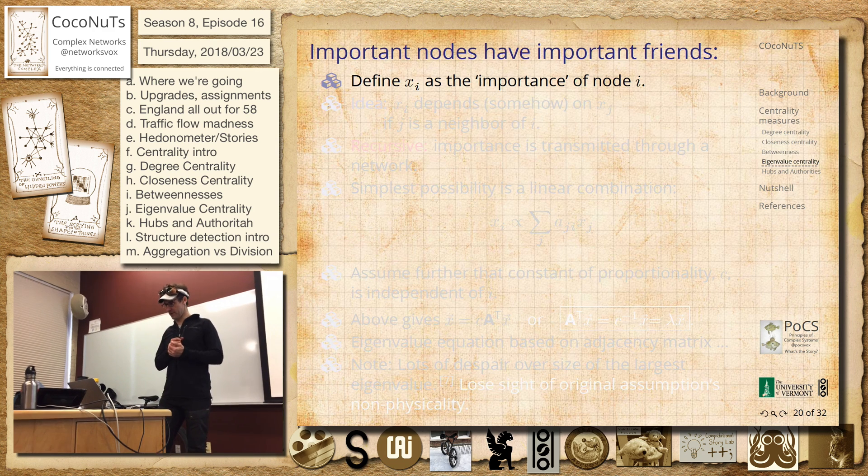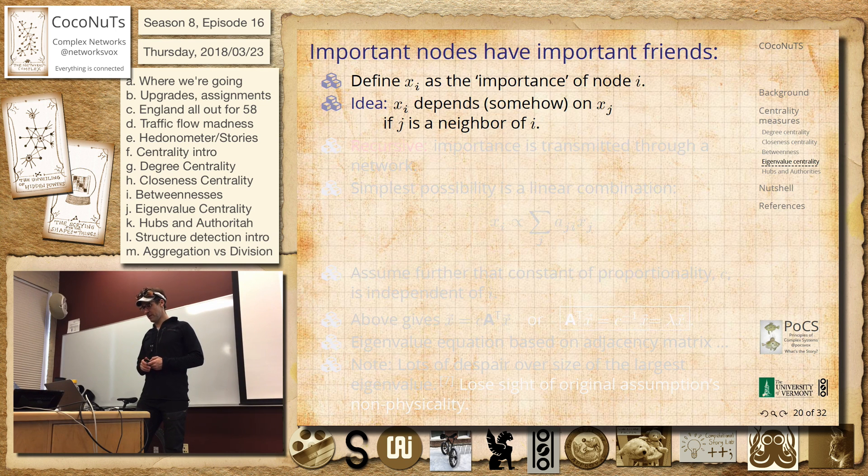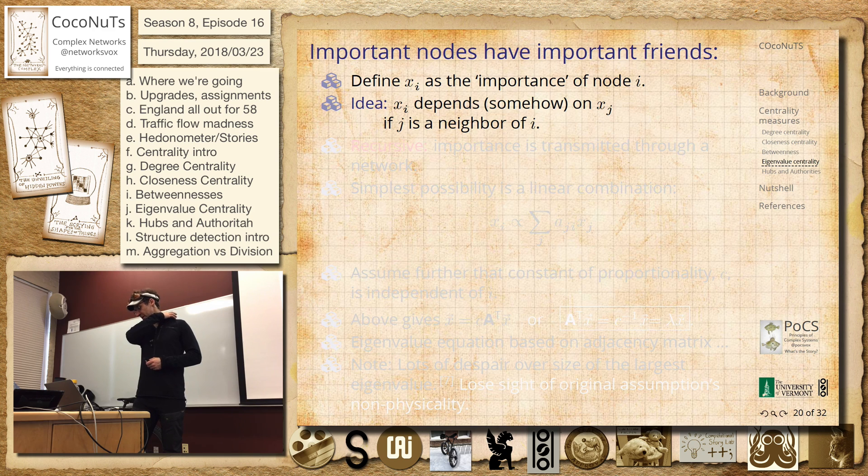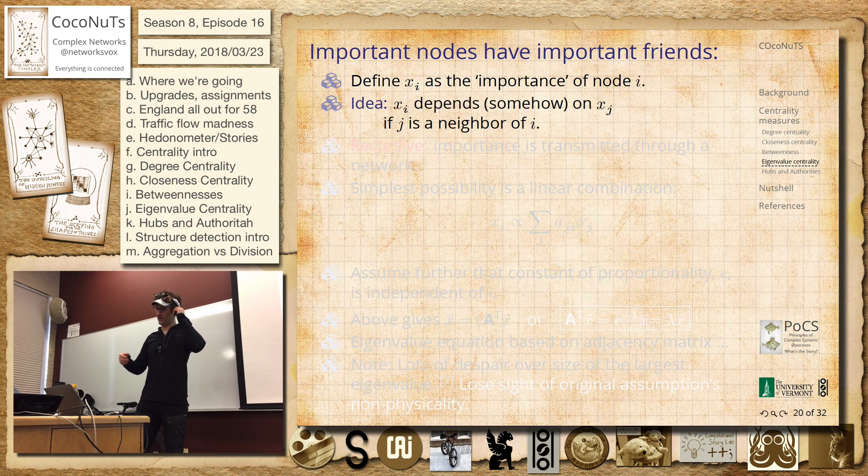So we're just going to say that nodes have some measure of importance. We'll generalize that in one way in the next section. But the idea is it's going to depend on the importance of the other nodes. So important nodes are connected to important nodes is kind of the idea here.